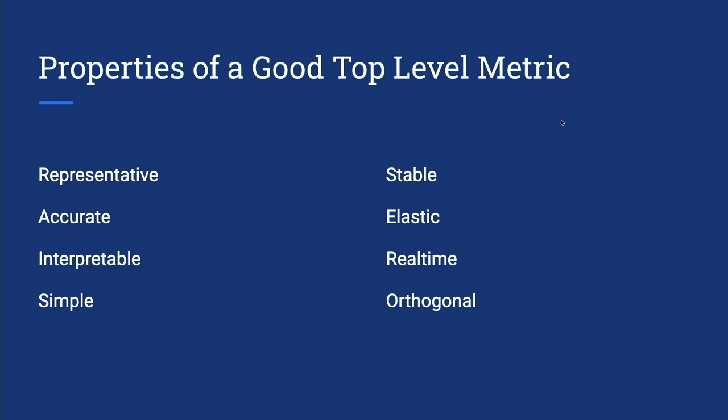Next, good top-level metrics should be as few as possible and orthogonal — we just mean that they should be different. If we have multiple top-level metrics measuring the same thing, that's a real waste of energy.